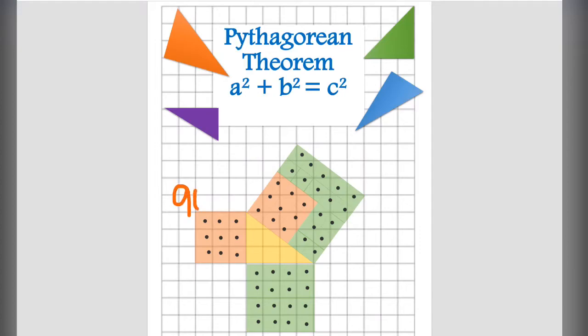So now let's think back to the theorem. We have nine units squared here. We have 16 units squared here. And if I would combine nine and 16, I will get 25 units squared.